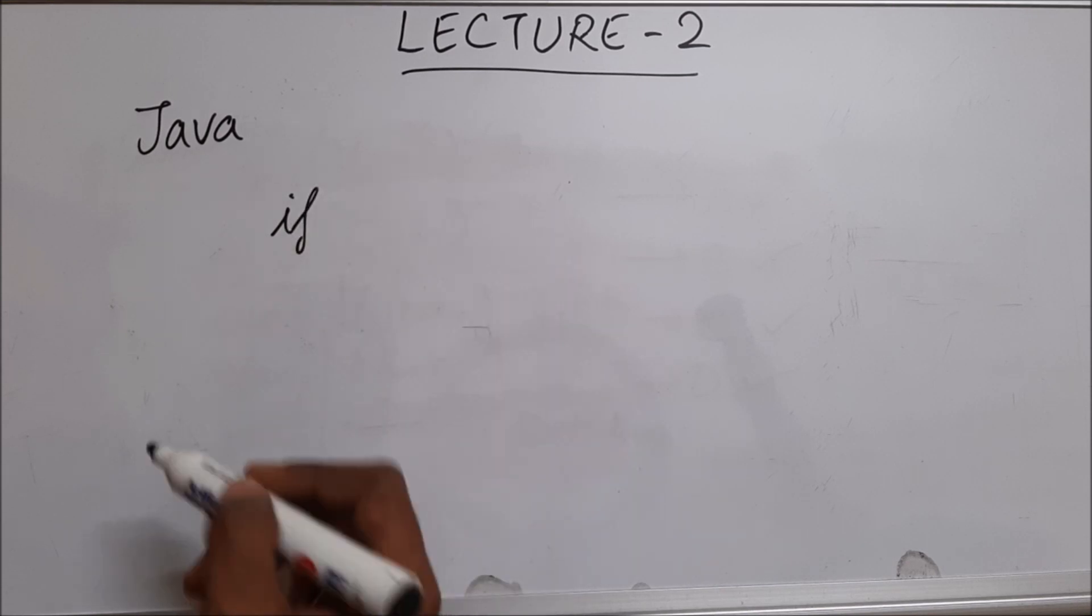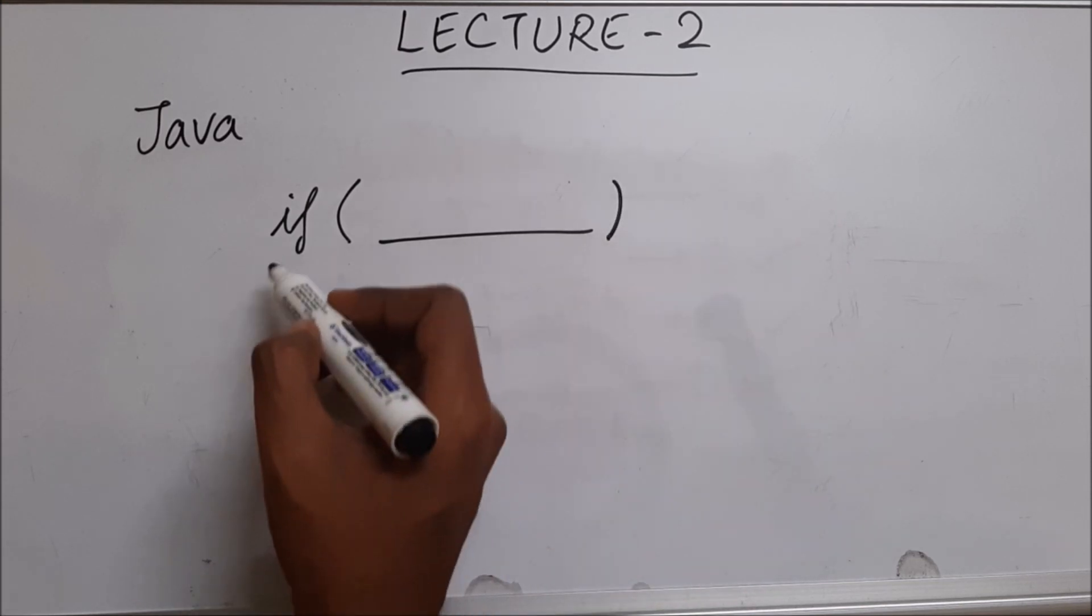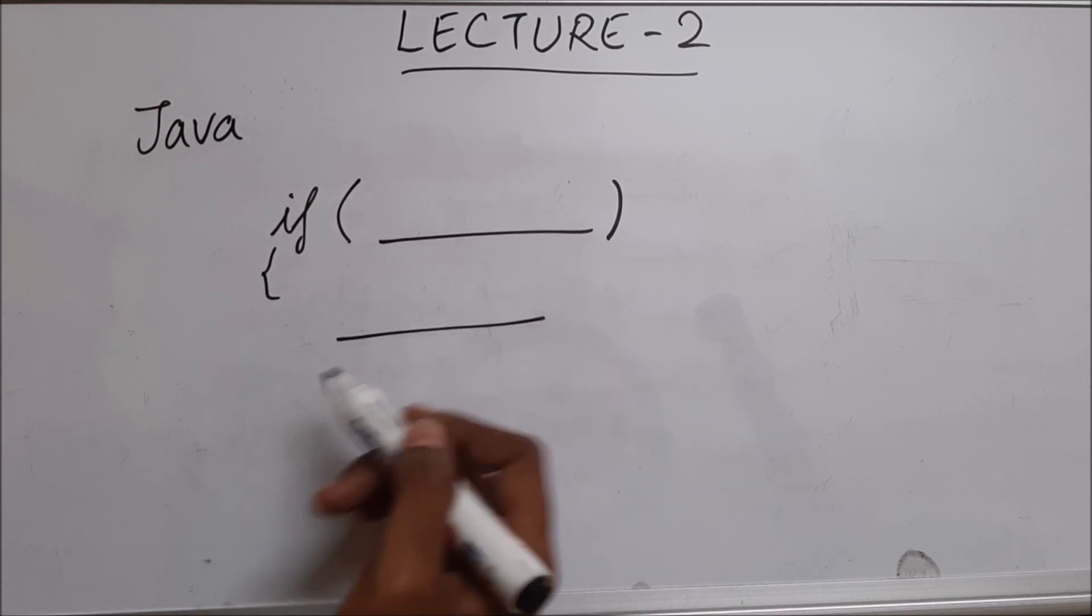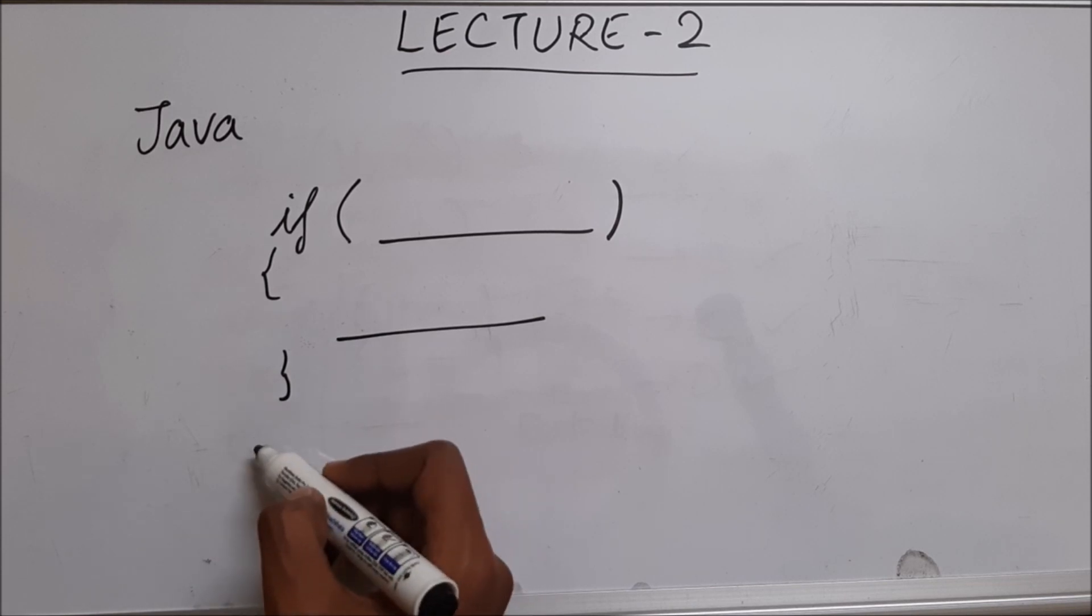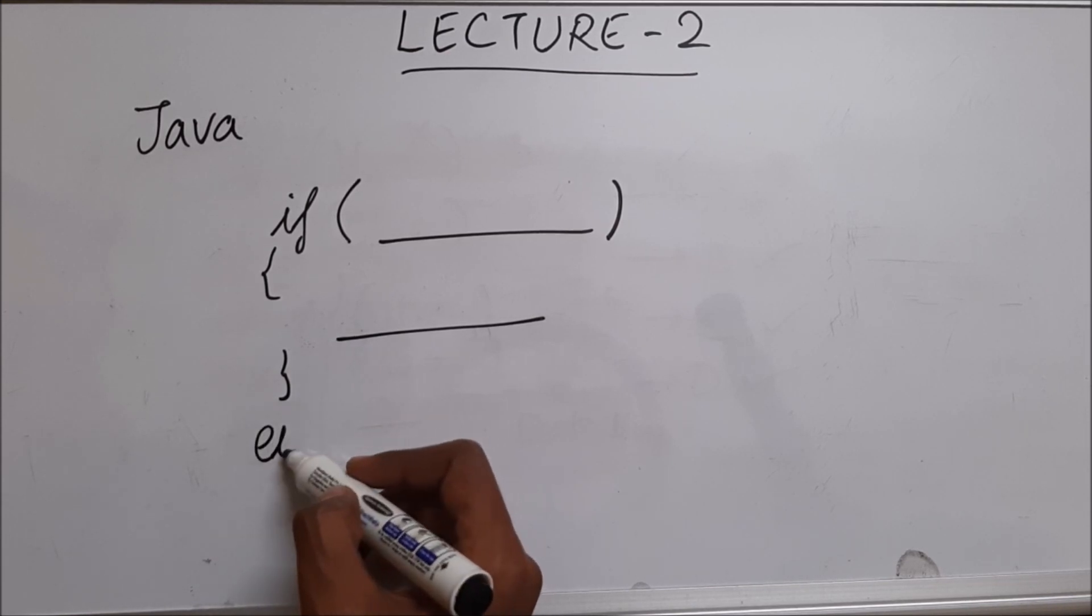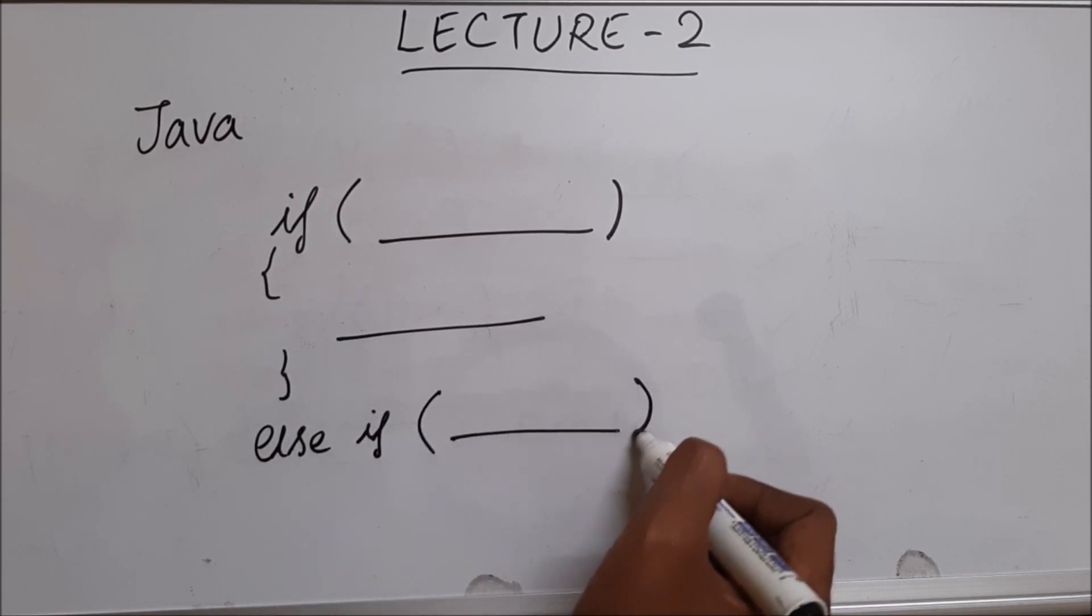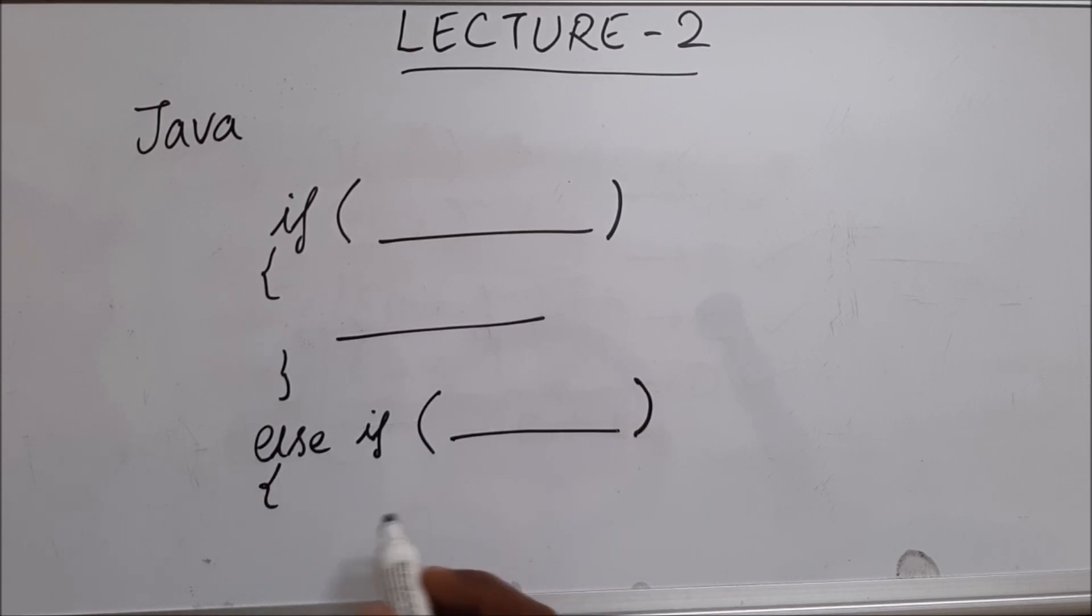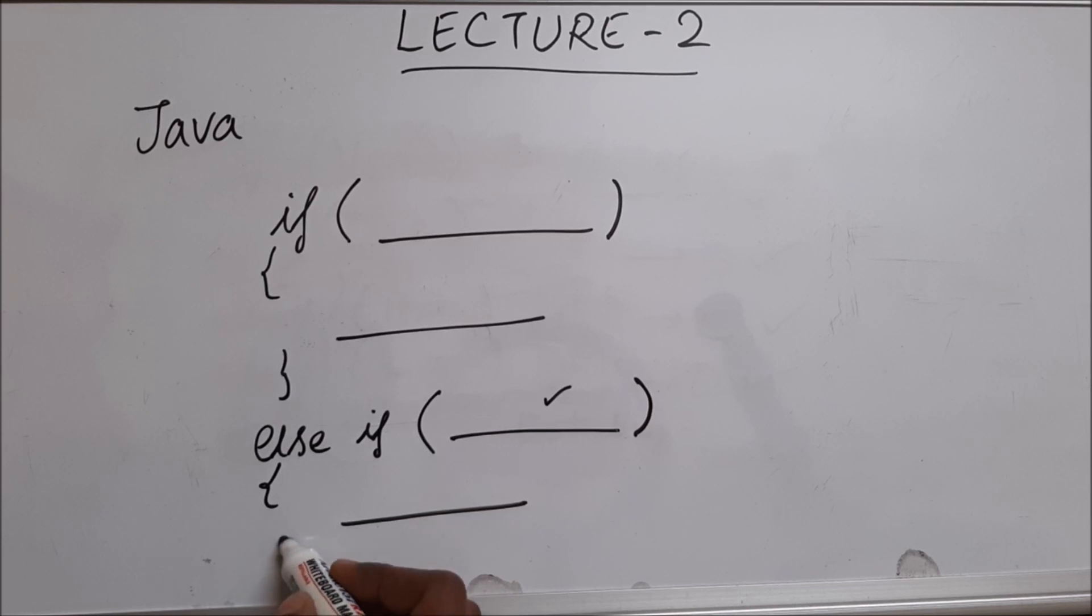You'll say if, then you'll open a bracket, then here you will give the condition. Then you'll open braces, then you'll tell what is to be done when this condition is met, then you will close this. Then you'll write else if. It's the same. You'll say else if, this is for the condition, you open braces, then you will describe what are the things to be done when this condition is met, then you will close this.